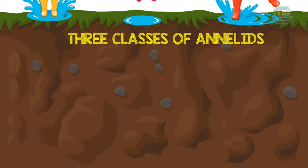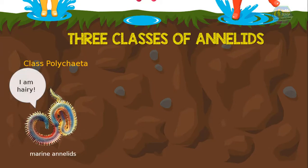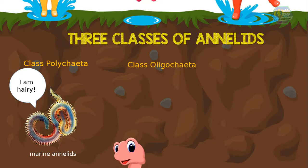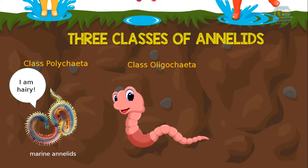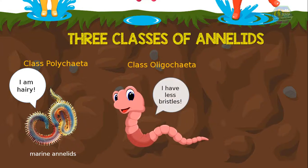So what are the kinds of annelids? There are three classes. First is Class Polychaeta, or the bristle worms — they are marine annelids and are usually hairy, but less popular compared to others. Next is Class Oligochaeta — the marine, freshwater, and terrestrial annelids. Unlike bristle worms, they have fewer bristles. One example is the popular earthworm.